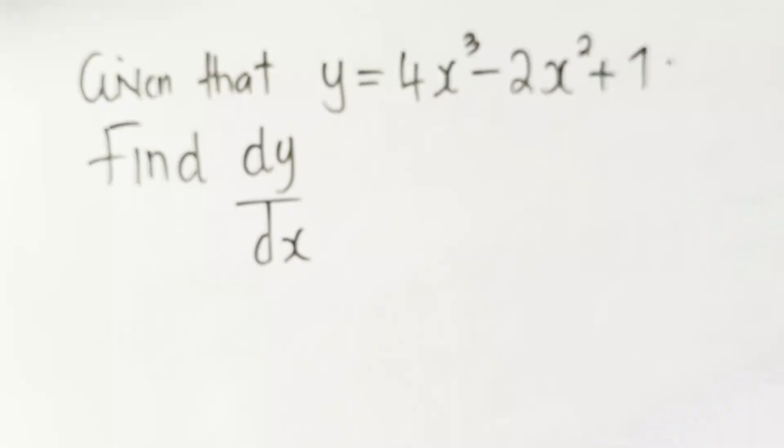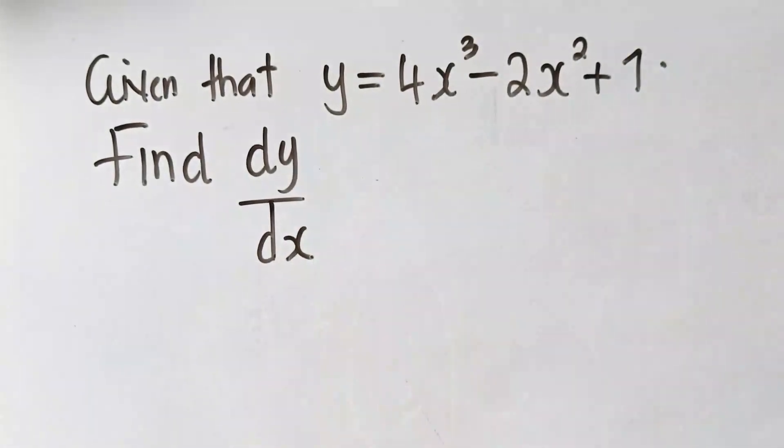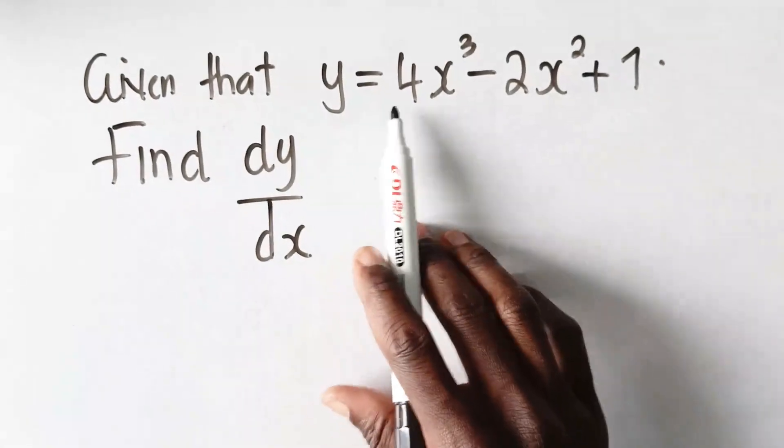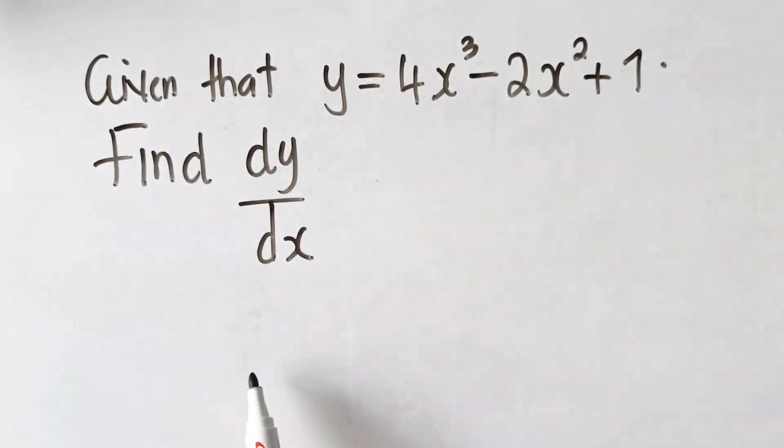Given that y is equal to whatever, it's just what is here. So how do we find dy dx? Given that y is equal to 4x to the power 3 minus 2x squared plus 1, how do we find dy dx?